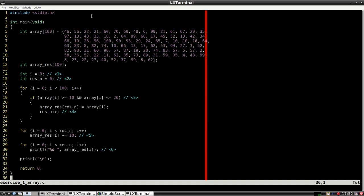At line 27, we increase each element of array_res by 10. And finally, at line 30, we print the resulting array.